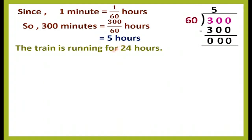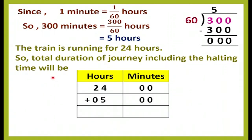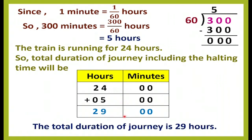The train is running for 24 hours. So the total duration of the journey including halting time is 24 hours plus 5 hours. Adding: 4 plus 5 is 9 and 2 plus 0 is 2, giving us 29 hours. The total duration of the journey is 29 hours.